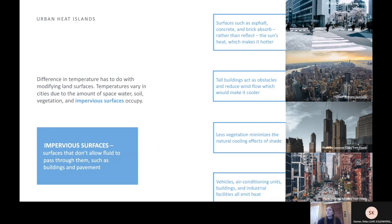What causes urban heat islands? The difference in temperature has to do with modified land surfaces. Temperatures vary in cities due to the amount of space that water, soil, vegetation, and impervious surfaces occupy. Impervious surfaces such as buildings and pavement absorb rather than reflect the sun's heat, which makes it hotter. Tall buildings act as obstacles and reduce wind flow, which would make it cooler. Less vegetation minimizes the natural cooling effects of shade. Vehicles, air conditioning units, buildings, and industrial facilities all emit heat. All of these things together contribute to cities being warmer than areas around them.